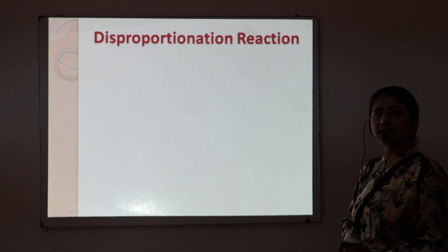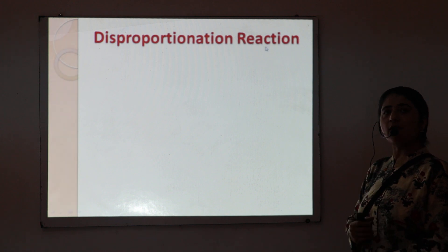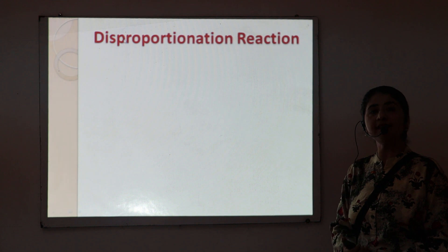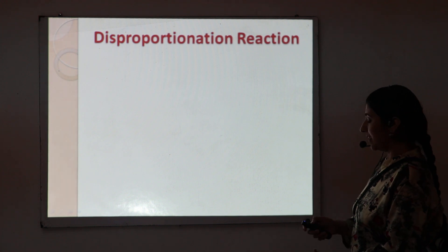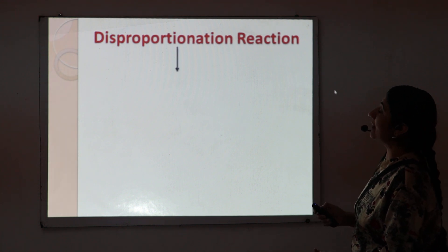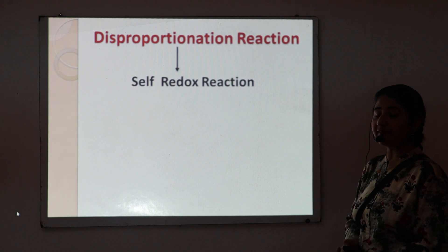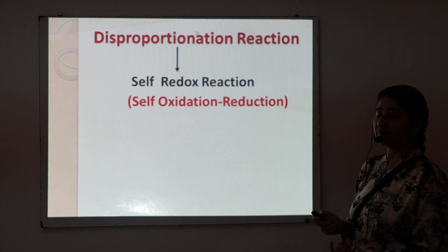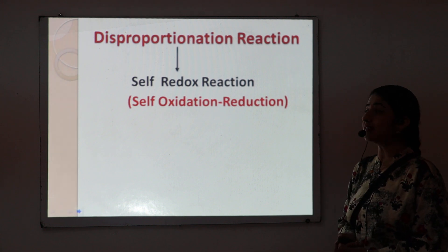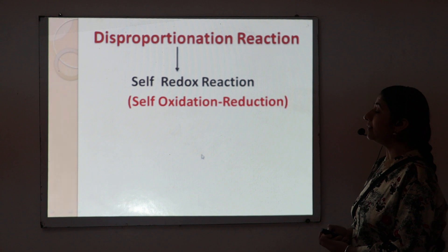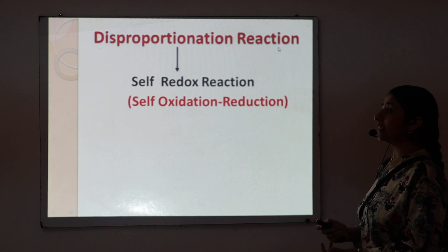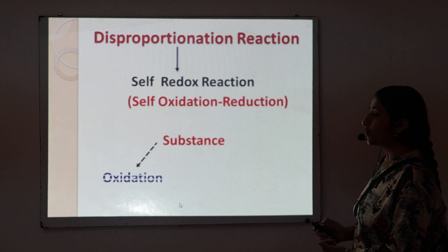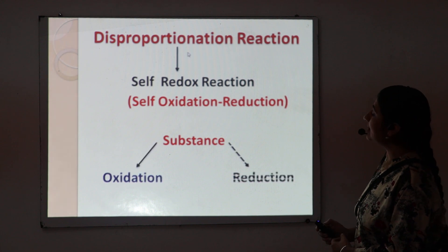As I told earlier, the Cannizzaro reaction is an example of a disproportionation reaction. So what is a disproportionation reaction? A disproportionation reaction is a self-redox reaction — that is, a self-oxidation and reduction reaction. This means a single substance undergoes oxidation as well as reduction.